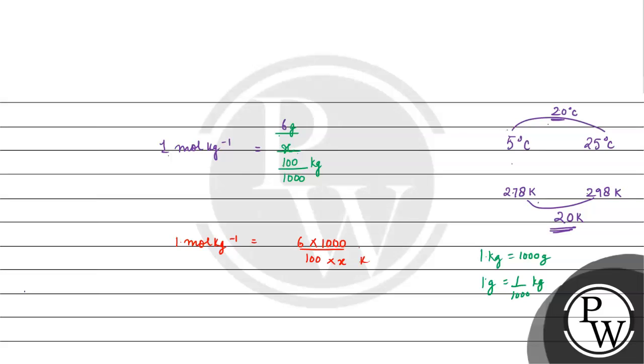We are given grams. This is in kilograms. This is also in kilograms. These two will cancel out. What will be x? X will be six thousand by hundred grams per mole.